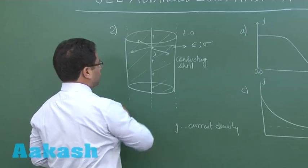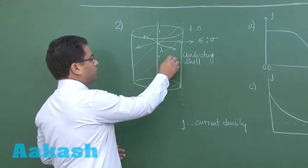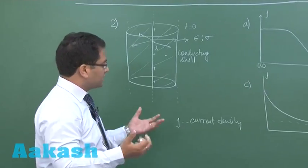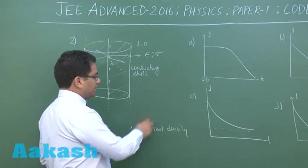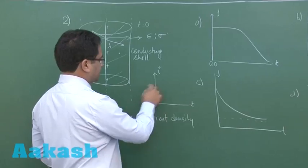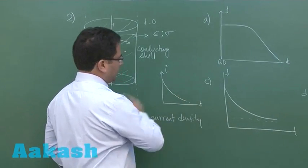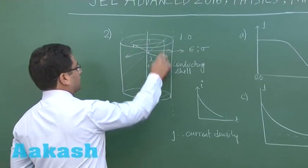But the current would not be steady. At a given point, if you try to see the variation of J with time, you can directly compare with the current variation in an RC discharging circuit, which would go in this way.